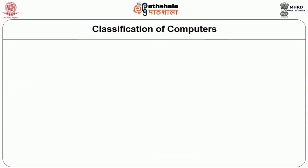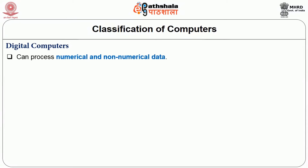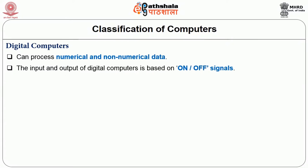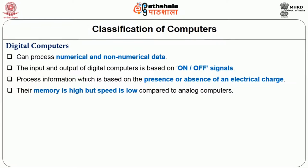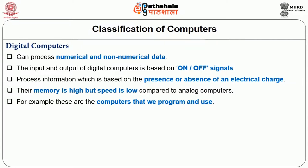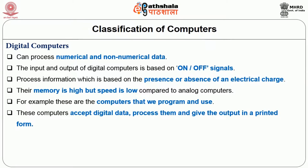Digital computers can process numerical and non-numerical data. The input and output of digital computers is based on on-off signals. Digital computers process information based on the presence or absence of an electrical charge. Their memory is high but speed is low compared to analog computers. These are the computers that we program and use; they accept digital data, process them, and give the output in printed form.